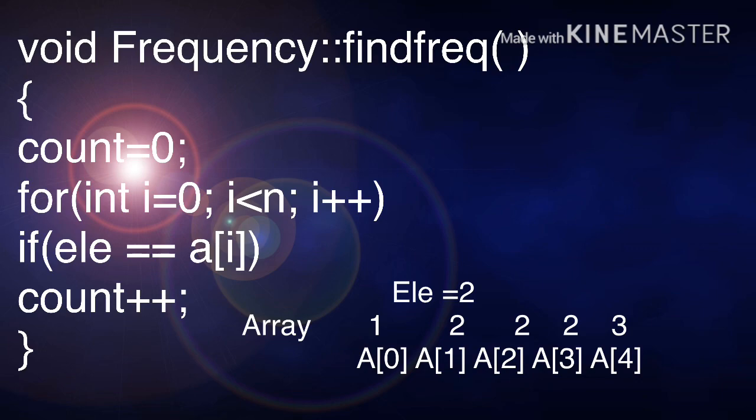Now i value is 1. So if element - element is 2, a[i] is 1. So a[1], we have 2. So 2 is equal to 2. Now the count value will be increased by 1. So initially, count value was 0. Now it is increased by 1. So count value is 1. Again, it goes back to the for loop.